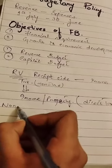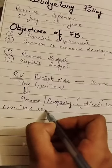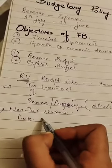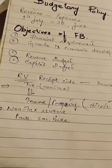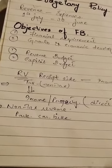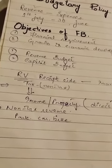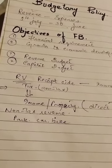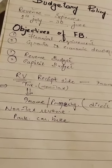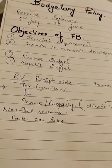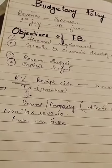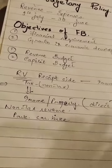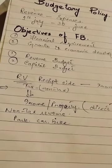Non-tax revenue — for example, if you go to a park and park your car or bike, you pay a parking ticket for 20 or 30 minutes. You also have to pay service charges on the motorway. These service charges are a form of non-tax revenue.